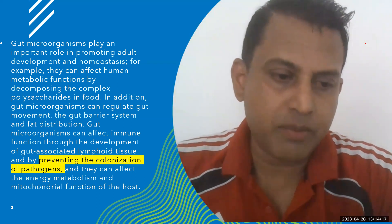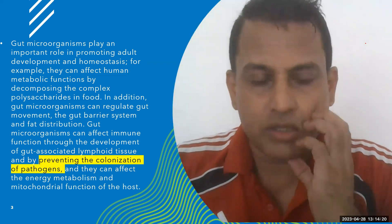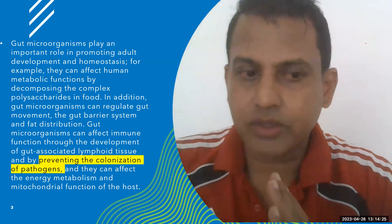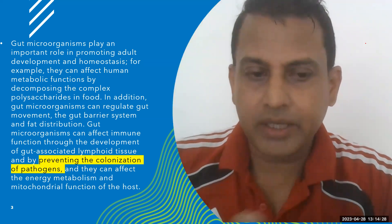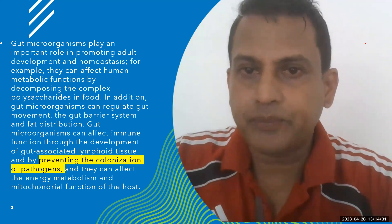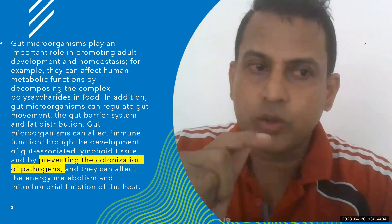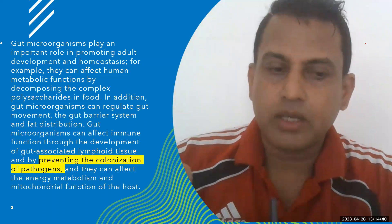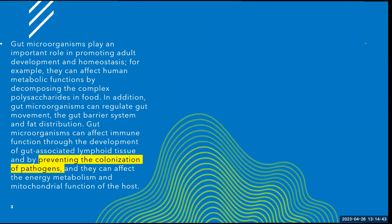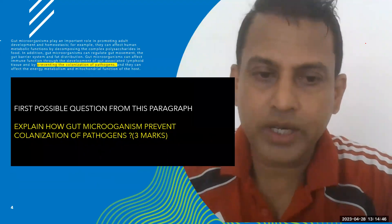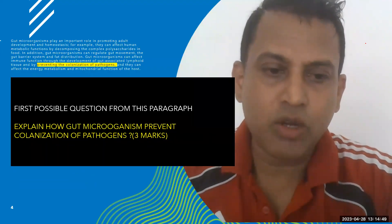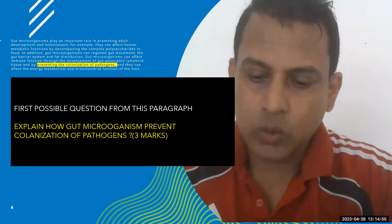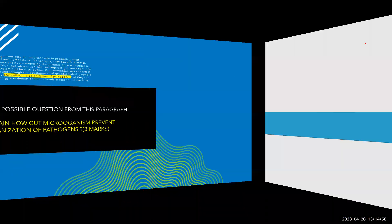So I take that part, and I'm going to show you one question from this paragraph two. There could be a few questions, but I'm going to show you one question. Question is, you might be asked this time, explain how gut microorganisms prevent colonization of pathogens with two or three marks. So the answer should be like this.